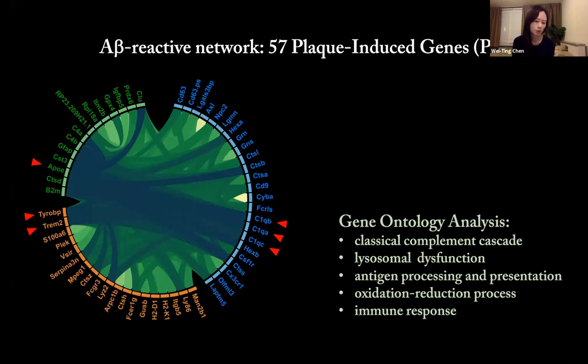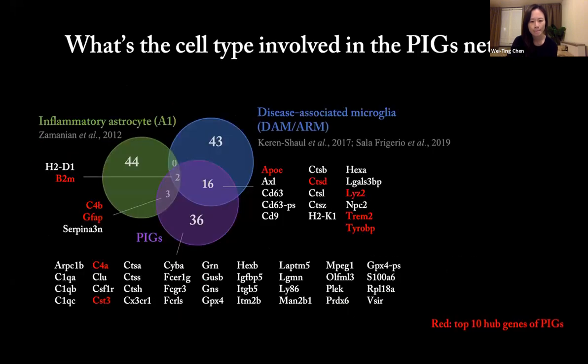Now we find a network corresponding to plaque deposition. We know the mechanism and the molecules, but we don't know what cells express and drive this network. We overlap our network with previously identified marker genes of disease-associated astrocytes and microglia. It's clearly not only from one cell type. We also have genes which are not identified as those cell markers.